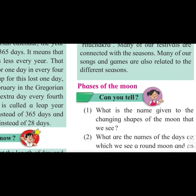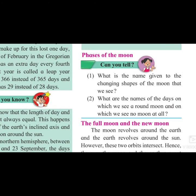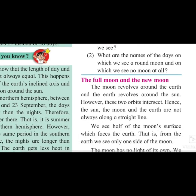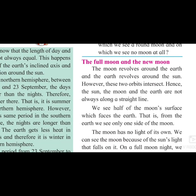Now we will look at the phases of the moon. The moon is not the same shape every day — you can see the size and shape of the moon changing. Sometimes it is decreasing, sometimes it increases. These are called the phases of the moon. The full moon is called Purnima and the new moon is called Amavasya. The moon revolves around the earth and the earth revolves around the sun.